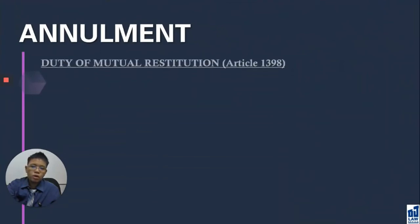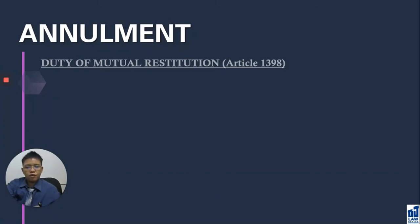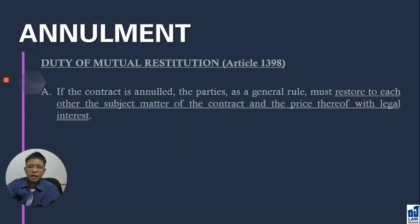Annulment also requires mutual restitution. If you remember the definition of annulment, there is an order to restore the parties to their original positions before the contract was entered into. We restore the parties to their original positions by mutual restitution — they return whatever they received under the contract. Under Article 1398, in a real obligation, the parties must restore to each other the subject matter of the contract and the price with legal interest.